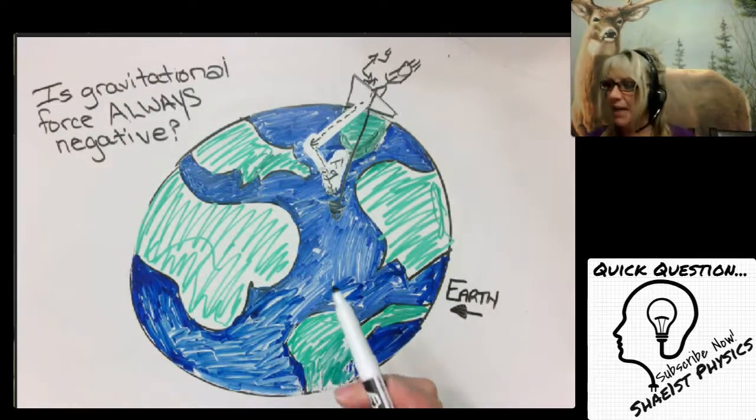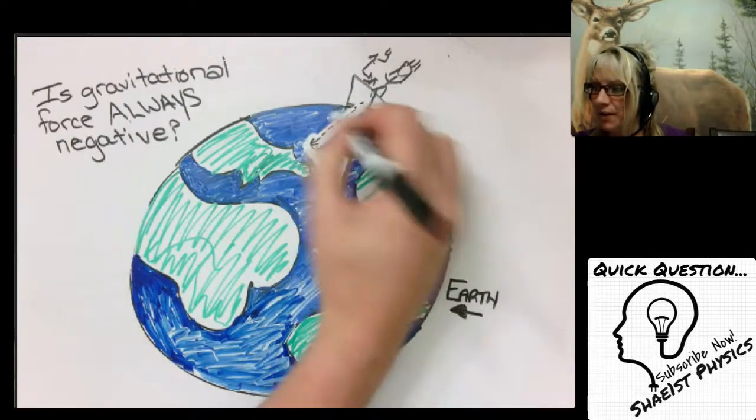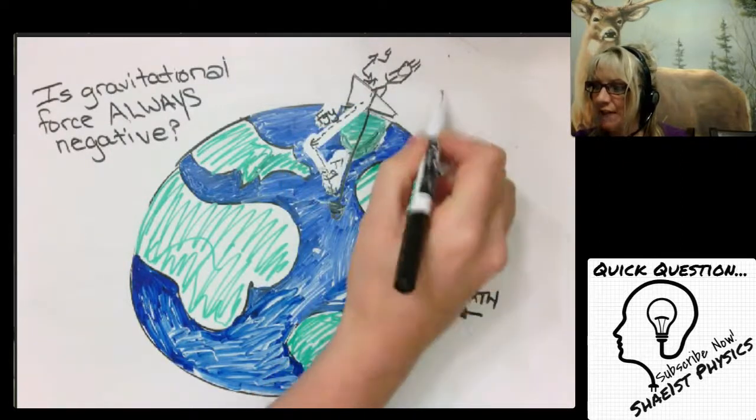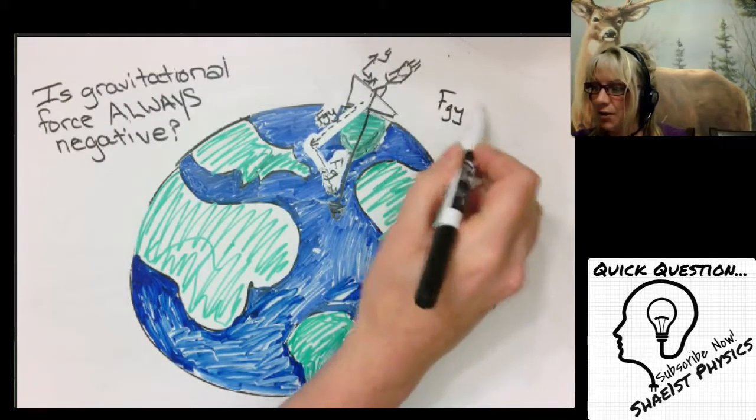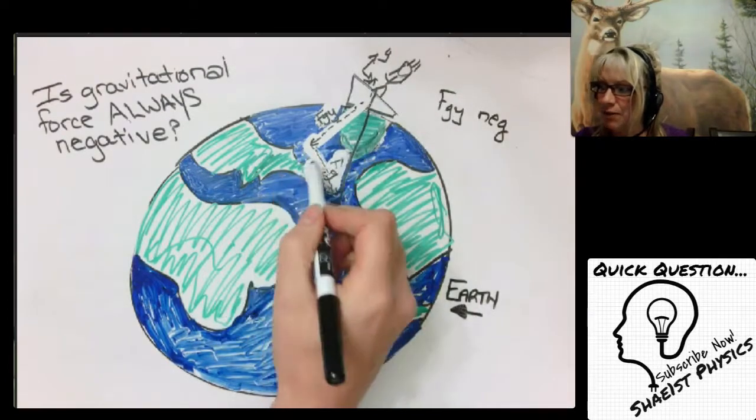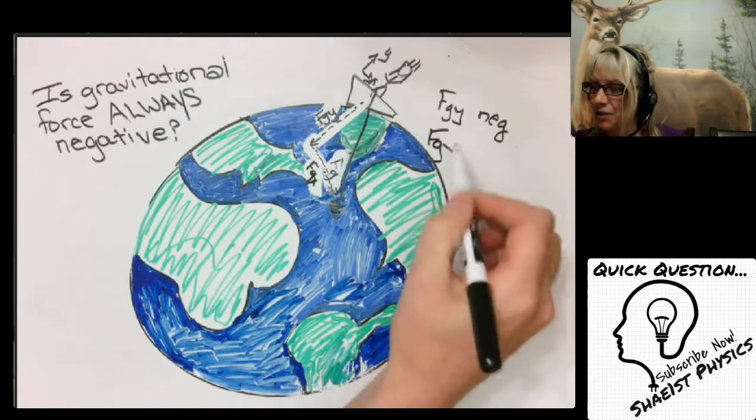Well in this case we have our Fgy component which would be this guy right here, Fgy component. Well Fgy is going to be negative, however our x component Fgx is going to be positive. So in this case we have one component of gravity that's positive.